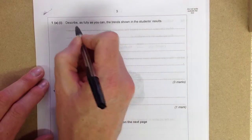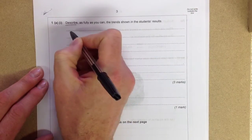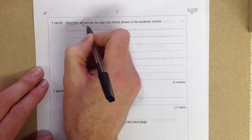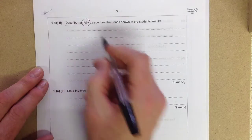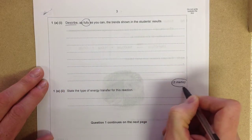As you can see from this question, the keyword here is describe. Next to describe, it says as fully as you can. That's basically indicating you look down to the mark scheme, which has three marks.